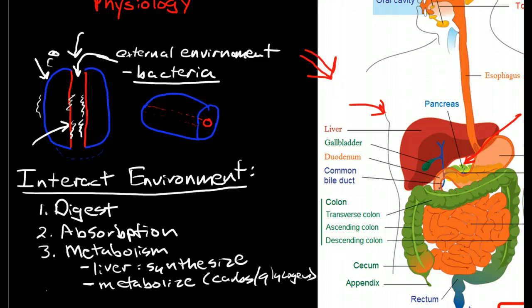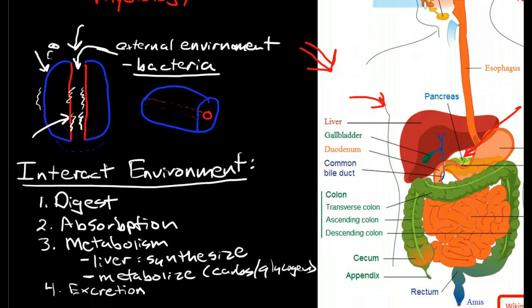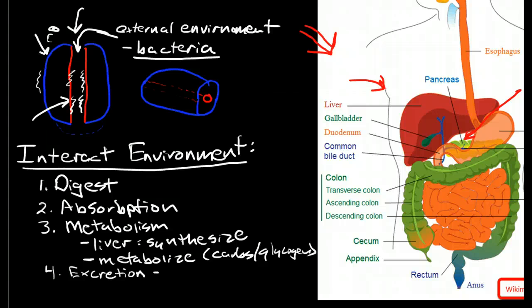And then also, excretion. We are removing back into the environment, out of our internal environment and into the external environment, things that are a threat to the organism. So, wastes. And through the GI tract, this means food stuff that we can't digest.